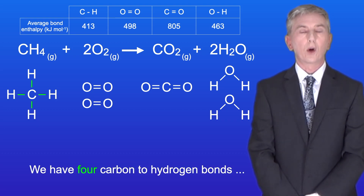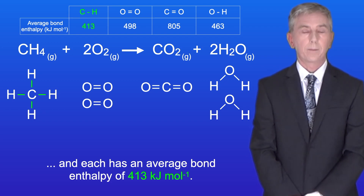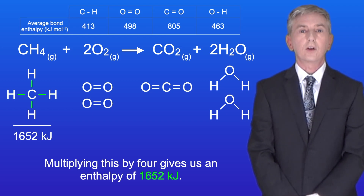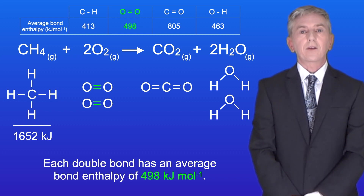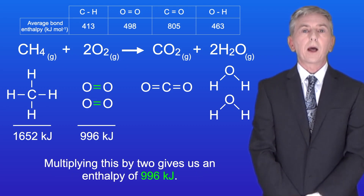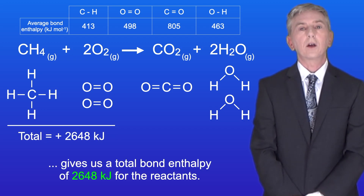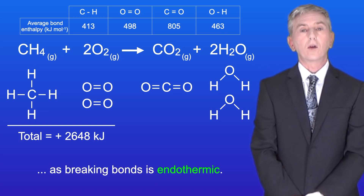Okay, we've got four carbon to hydrogen bonds, and each has an average bond enthalpy of 413 kilojoules per mole. Multiplying this by four gives us an enthalpy of 1652 kilojoules. We've got two oxygen to oxygen double bonds, and each double bond has an average bond enthalpy of 498 kilojoules per mole. Multiplying this by two gives us an enthalpy of 996 kilojoules. Adding these together gives us a total bond enthalpy of 2648 kilojoules for the reactants, and remember that this is a positive number as breaking bonds is endothermic.